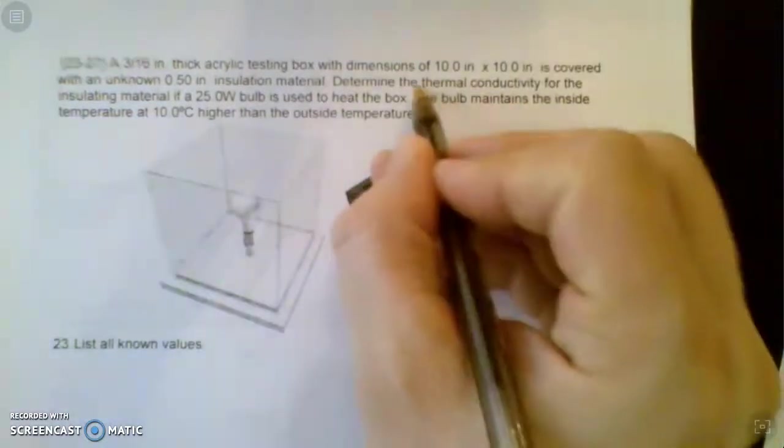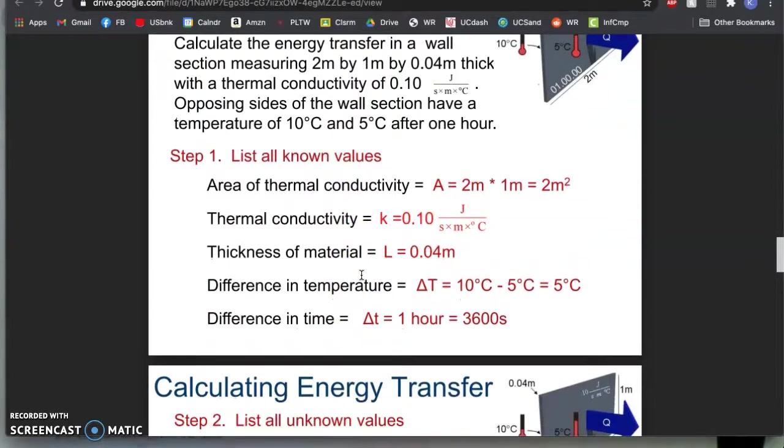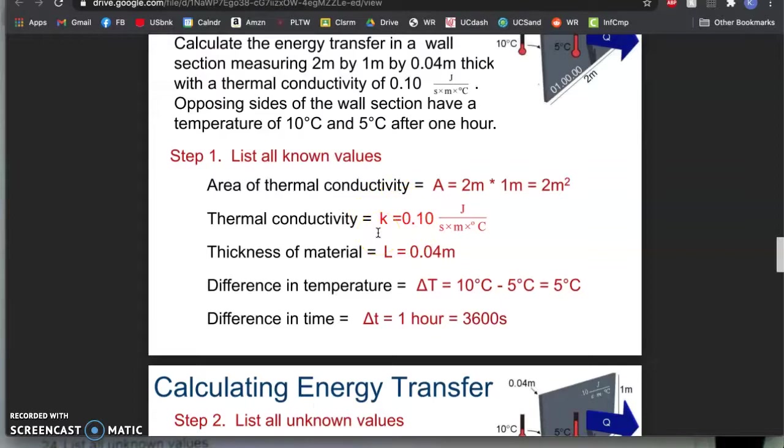The second problem is asking about thermal conductivity. So you kind of want to focus on a problem like this where you're looking for K, the thermal conductivity. And you can know the area because you have a 10 by 10 piece. So it's very similar to this. It says a thickness and the area and an unknown material, thickness of the material, temperature difference. It says it's 10 degrees higher inside than outside, so you already know the change in temperature.